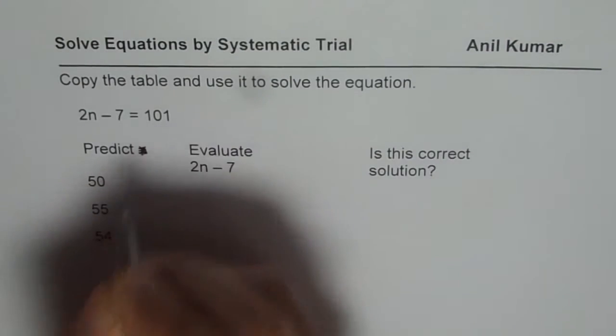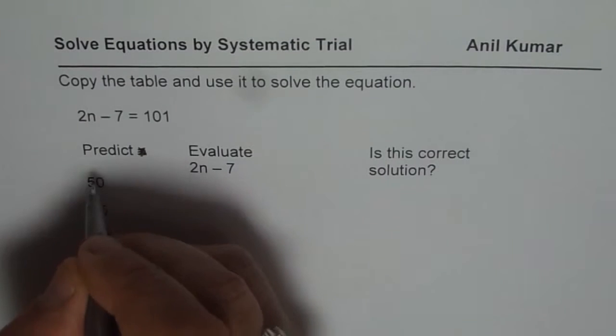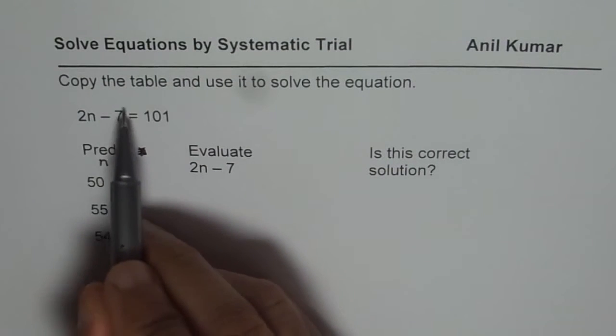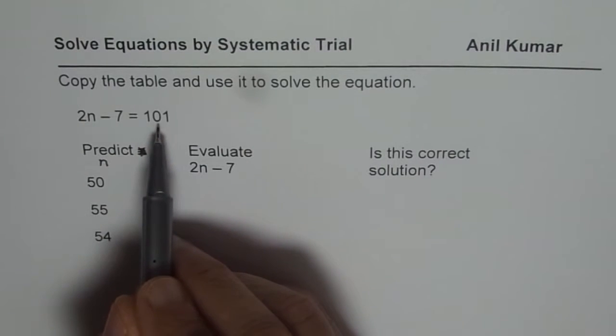The method of systematic trial says that you need to estimate a value of n—in this case, the variable is n—and then evaluate the expression. If the expression is exactly the same, that means we've got the solution.